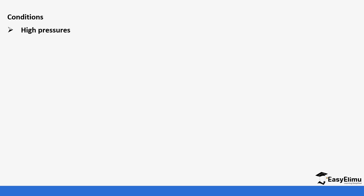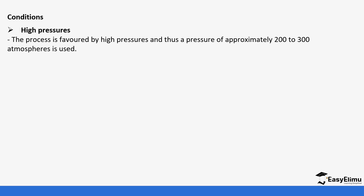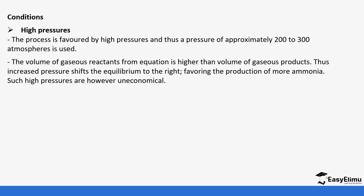The conditions for this reaction are things that are easily tested. The conditions include high pressures — the process is usually favored with high pressures, and an approximate pressure of 200 to 300 atmospheres is used. Some books will mention just 200 atmospheres, and that is still okay. The volume of gaseous reactants from the equation is higher than the volume of gaseous products, so increased pressure will shift the equilibrium to the right, favoring the production of more ammonia.